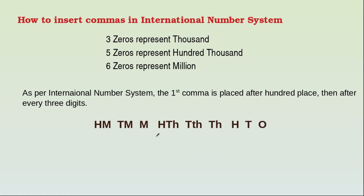Now we want to place the commas. The first comma is placed after the hundreds place — ones, tens, hundred — then a comma, then after every three digits: thousand, ten thousand, hundred thousand, comma, then million, ten million, hundred million.